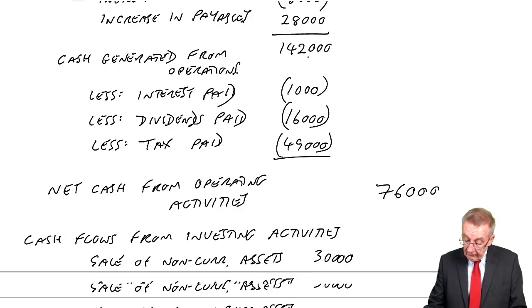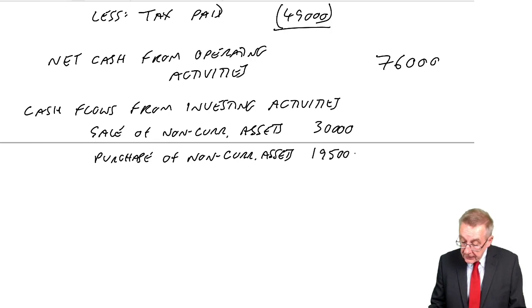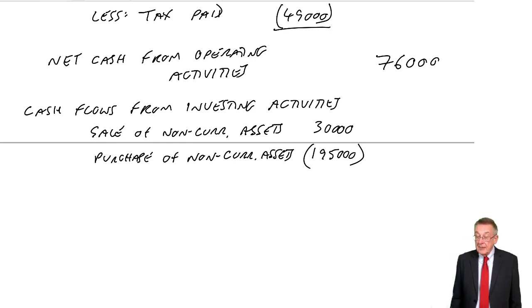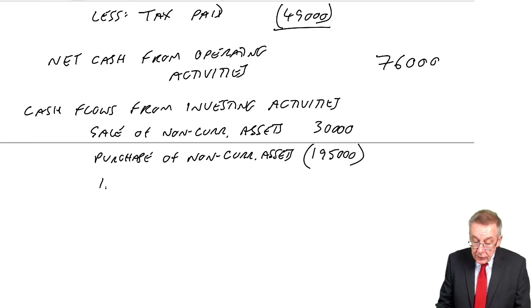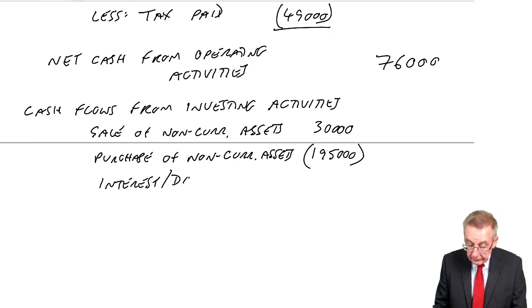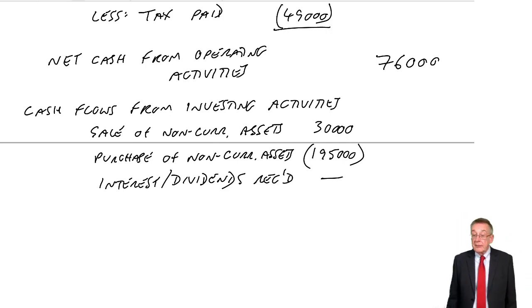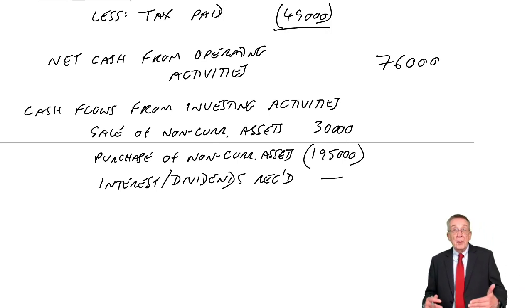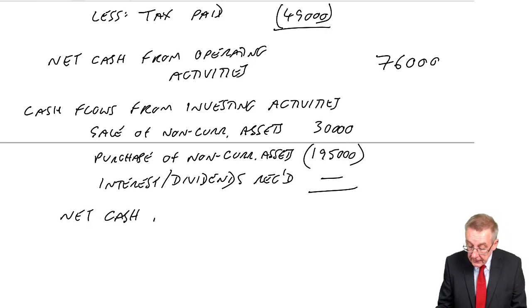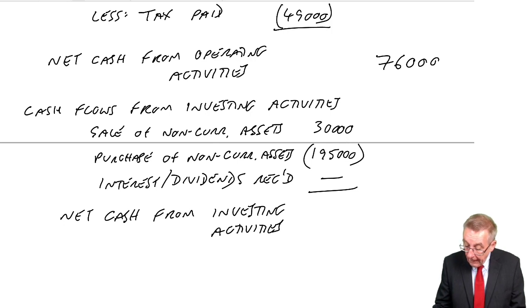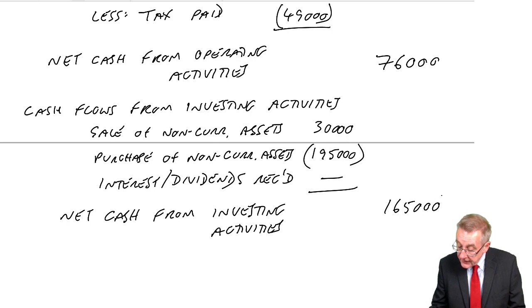Now I can go back to the statement. Purchase of non-current assets: £195,000 — a cash outflow, shown in brackets. The only other items under this heading would be any interest or dividends received, but there's no mention of any here. So the net cash from investing activities is an outflow of £165,000.